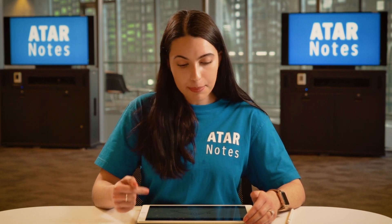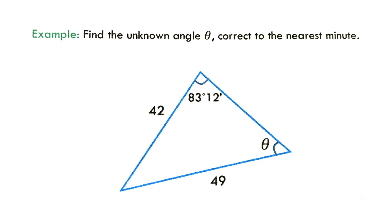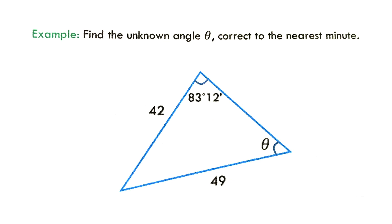If we look at the example here, it says find the unknown angle theta correct to the nearest minute. We can use the sine rule here because we have two sides and one angle opposite one of the given sides.